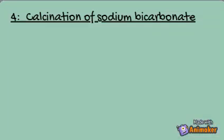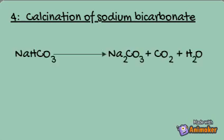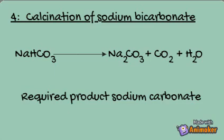After filtration, we take the sodium bicarbonate and heat it. Because we are manufacturing sodium carbonate, after heating it we obtain sodium carbonate, carbon dioxide, and water. This process is called calcination. Thus we have manufactured our required product, which is sodium carbonate.